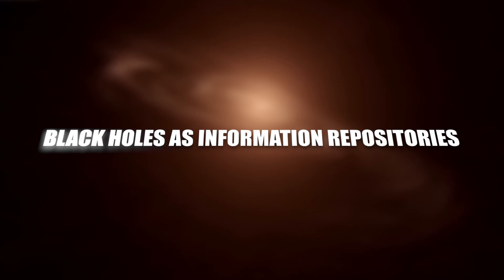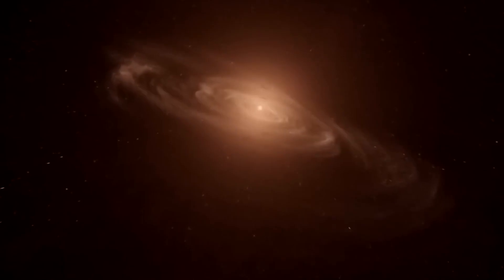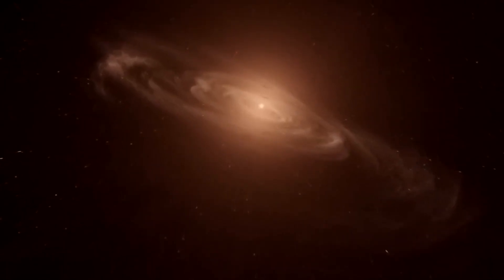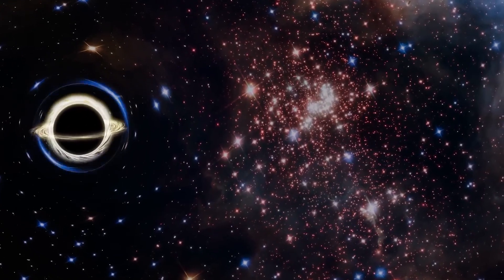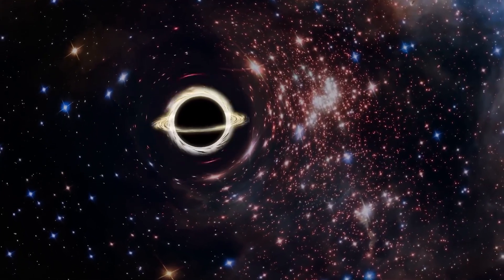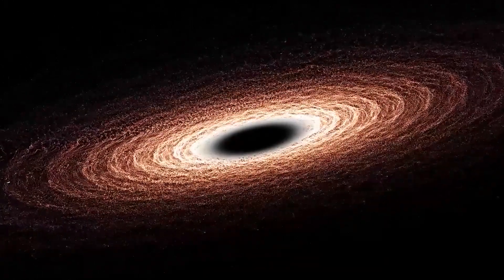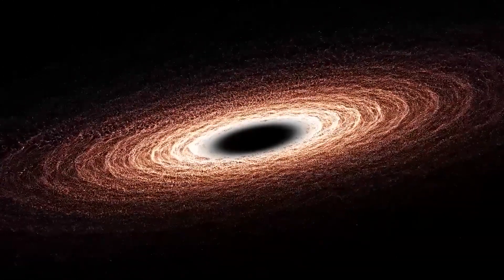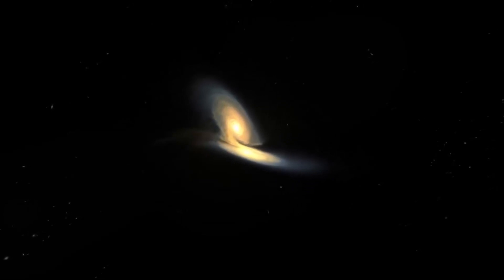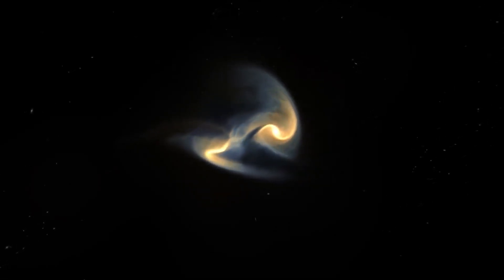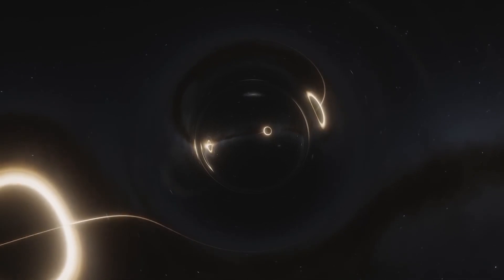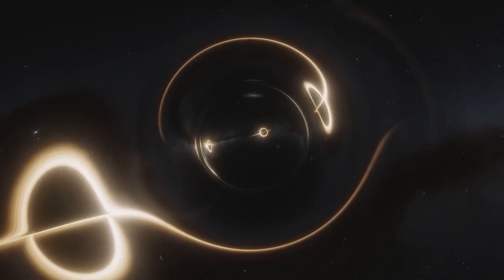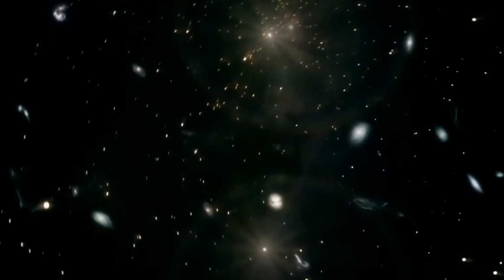Black holes as information repositories. Black holes are known to possess an intriguing property called the holographic principle. According to this principle, all the information contained within a black hole can be encoded on its event horizon. If we live inside a black hole, it opens up the possibility that the information of our universe may be holographically encoded on its boundary. This idea has deep implications for the fundamental nature of information and the limits of our understanding.